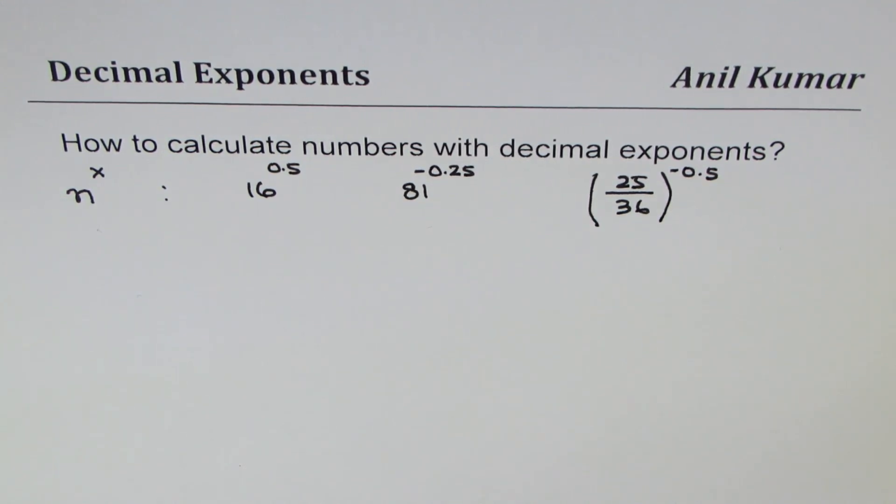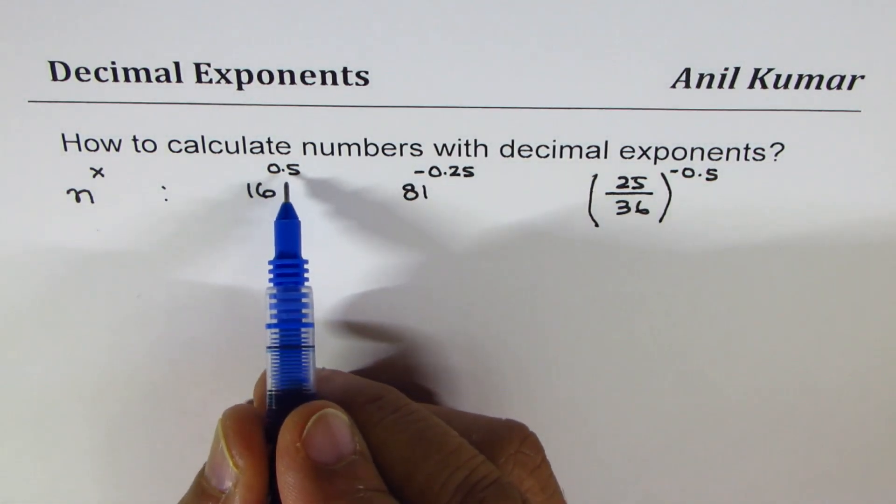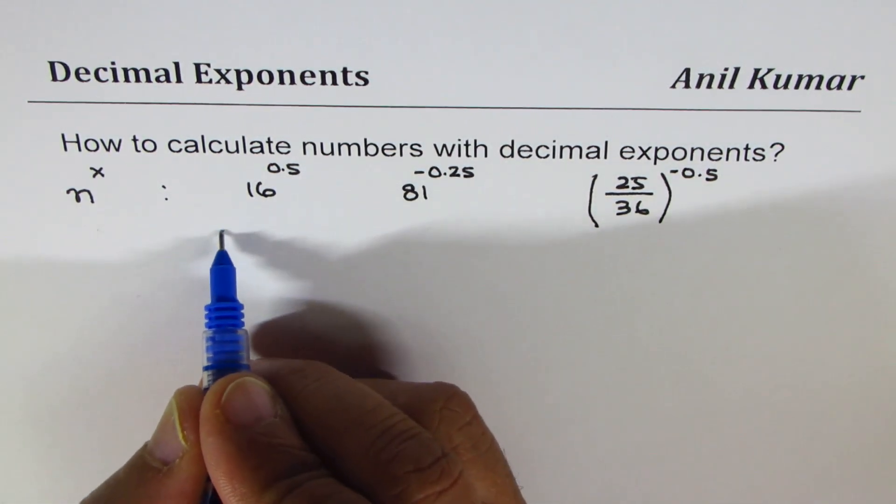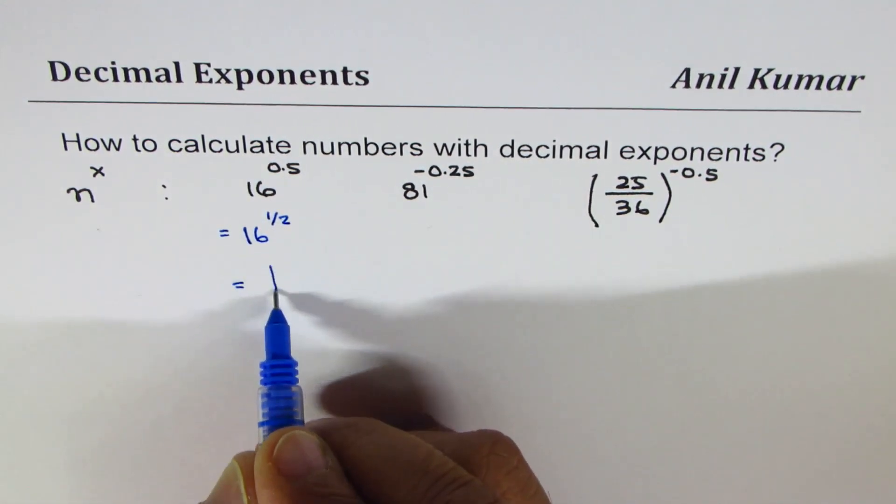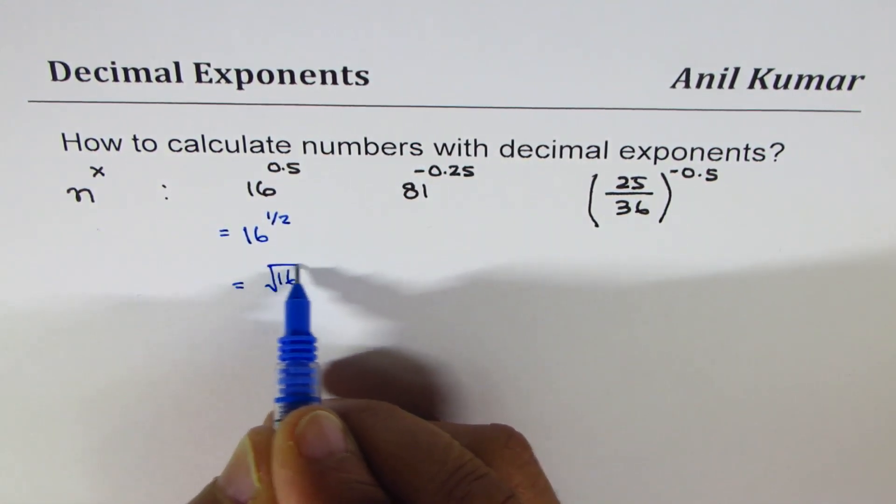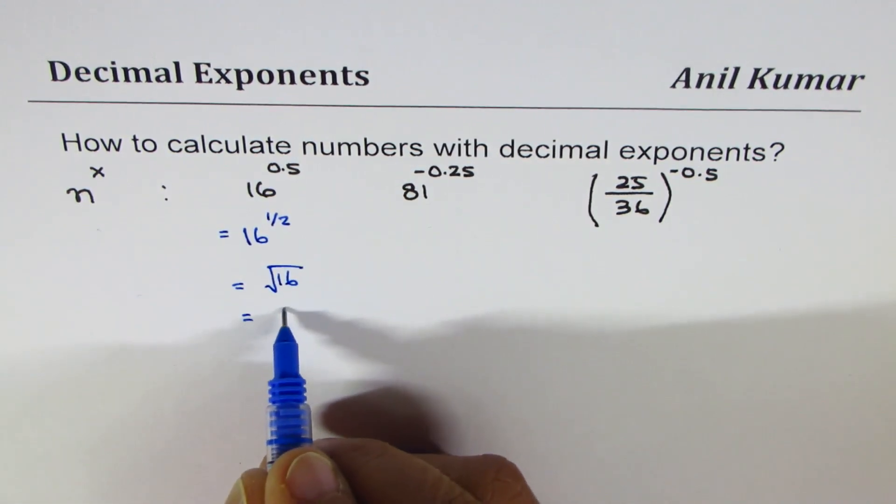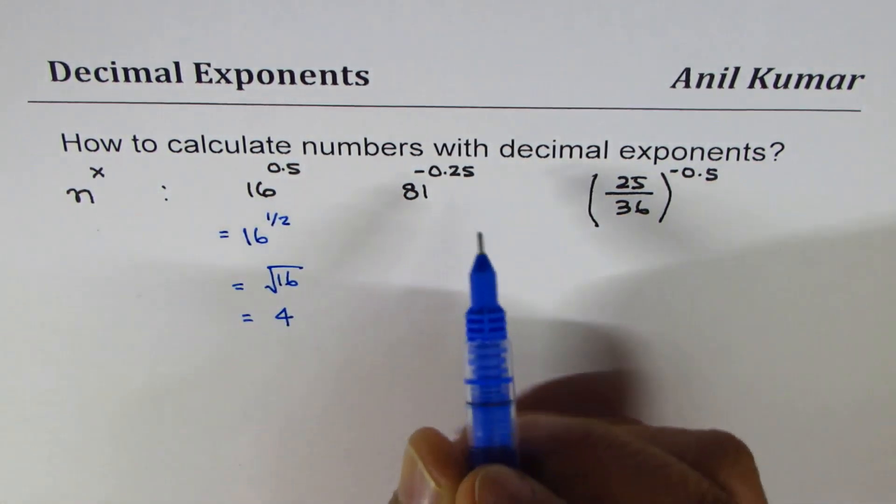Now when we say 16 to the power of 0.5, it really means it equals 16 to the power of half, which is square root of 16, and as you know square root of 16 is 4.